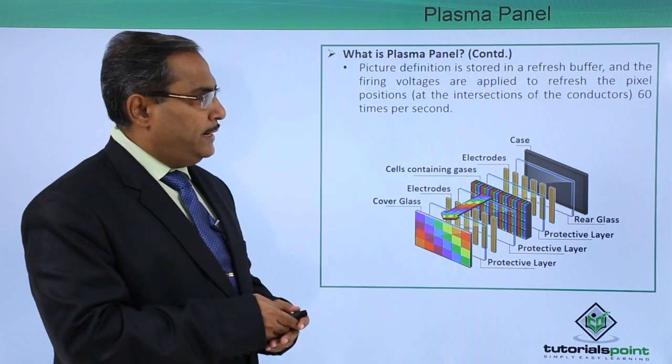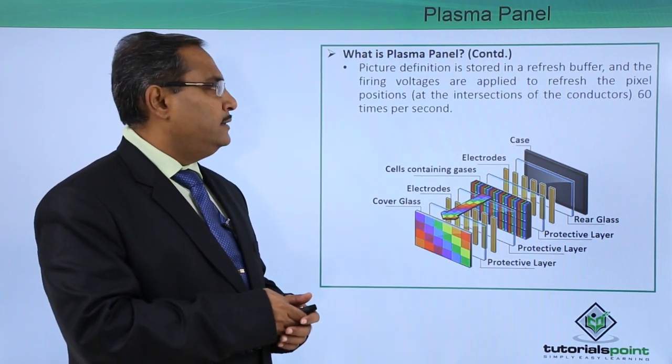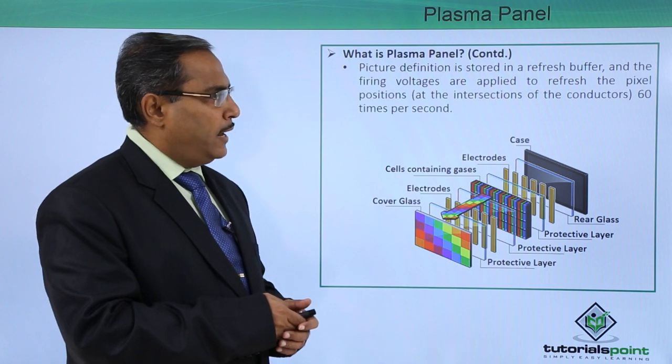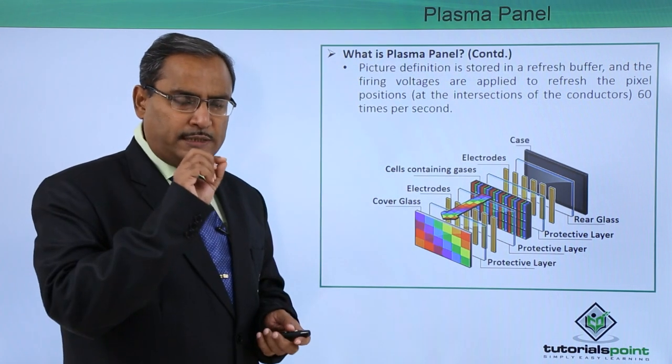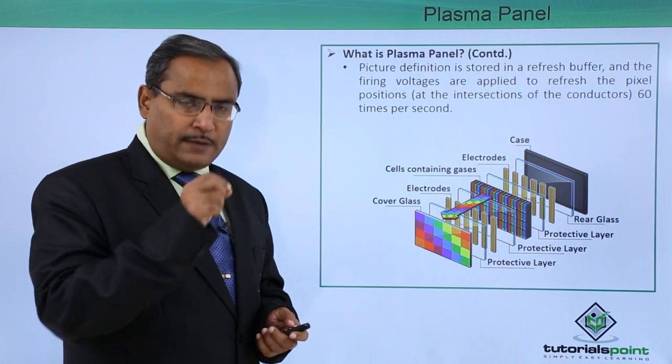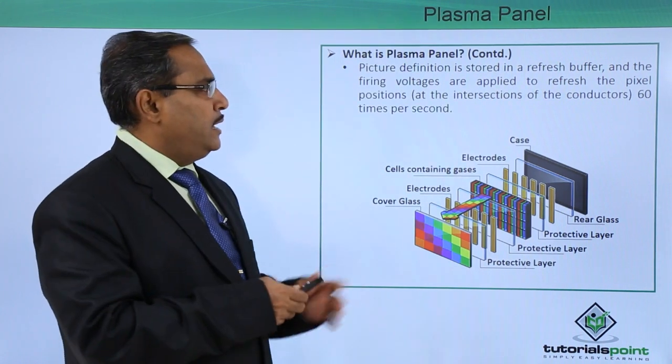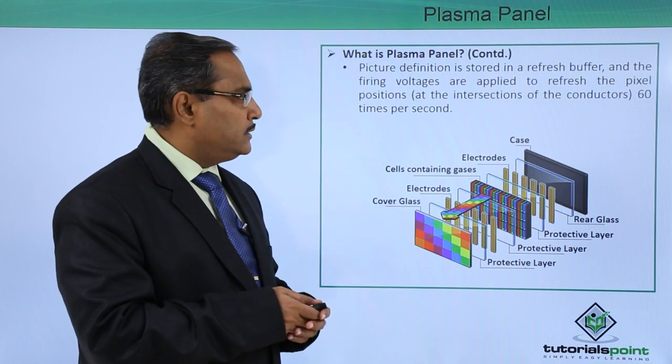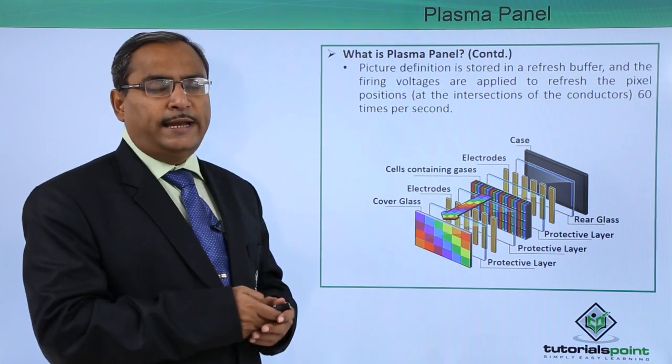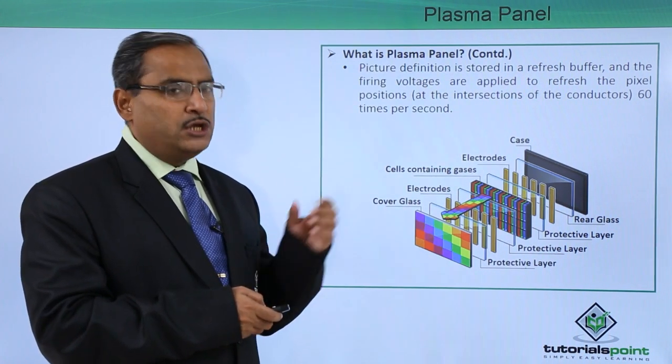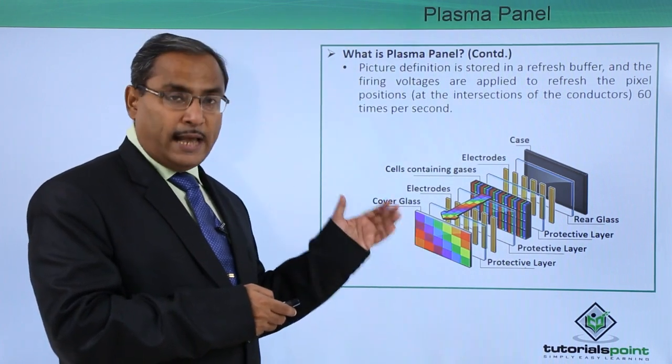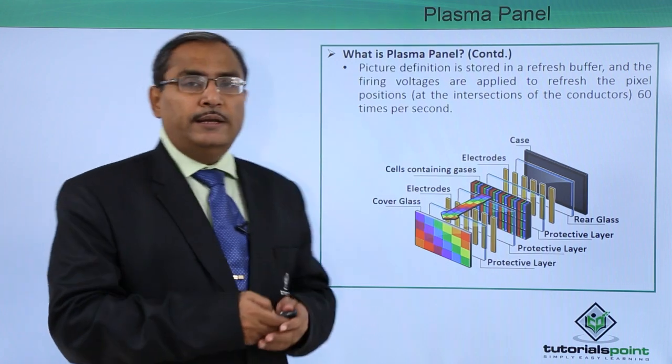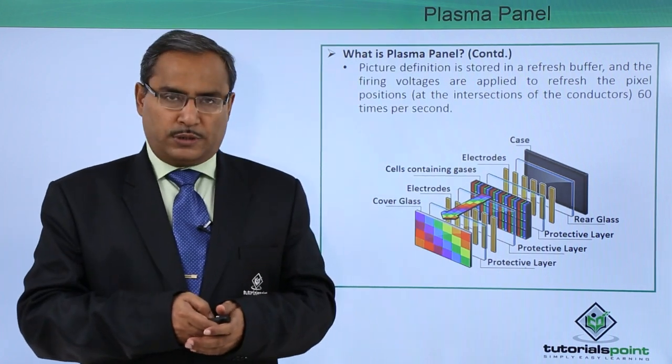Picture definition is stored in a refresh buffer and the firing voltages are applied to refresh the pixel position, determining where this particular pixel is going to glow and in which color. At the intersection of conductors, 60 times per second the pixel will be refreshed so that we can have a constant smooth display without any flickering. In this way the plasma panel works.